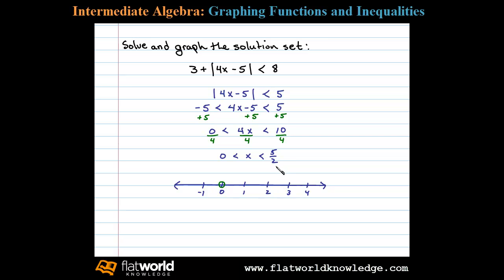We have an open dot at zero and an open dot at five halves, which is just two and a half. We'll shade all the numbers greater than zero and at the same time less than two and a half — all values between zero and two and a half. All solutions to the original inequality lie in this interval. Using interval notation, we write from zero to five halves, open interval, and that's our solution set.